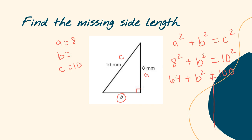Now I'm ready to start solving this equation because I have nothing else to simplify. I have 64 plus B squared equals 100. I need to get B by itself, so that means I need to move 64. Since 64 is positive, I subtract 64 on both sides — it cancels out on the left side, leaving me with B squared, and 100 minus 64 equals 36.